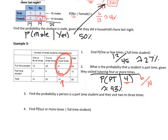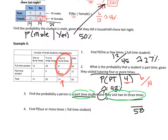Question three: find the probability a person is part-time and they visit two to three times. This one does not have the keyword 'given.' So you use the total — 58 people. How many are part-time and visit two or three times? Looking at the chart, that's five. So it's five out of 58. The keyword 'and' means both conditions happen at the same time, which is different from 'given.' Five divided by 58 is about 9%.